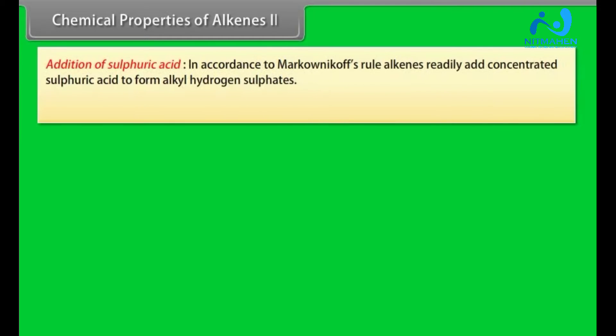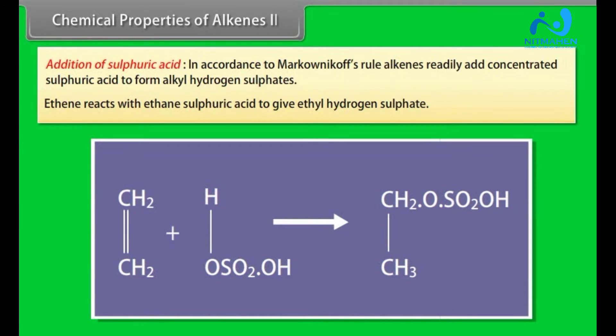Chemical Properties of Alkenes Part 2. Addition of Sulfuric Acid: In accordance to Markonikoff's rule, alkenes readily add concentrated sulfuric acid to form alkyl hydrogen sulfates. For example, ethene react with sulfuric acid to give ethyl hydrogen sulfate.